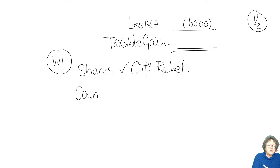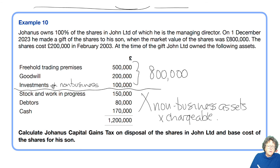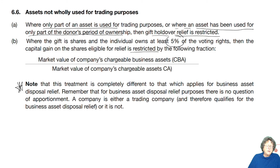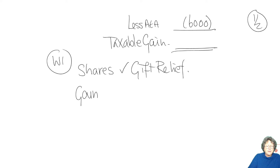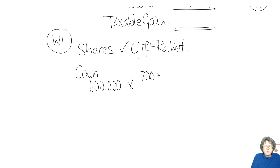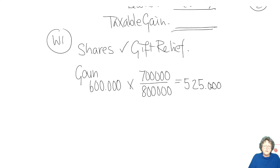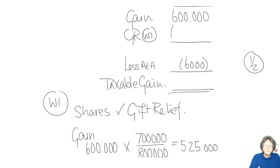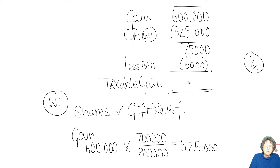The gain is restricted by chargeable business assets on the top and chargeable assets on the bottom. Always bear in mind that if it's a fraction, the bigger number is on the bottom. Those are the chargeable business assets, and those are the chargeable assets when we've removed the stock, debtors and bank. So £525,000 is the amount of gift relief that we can claim. Please show every piece of working, giving us a gain of £75,000.